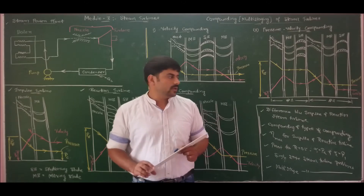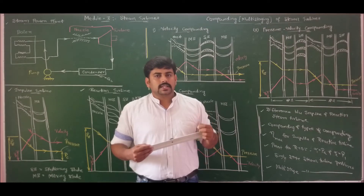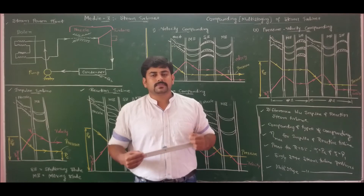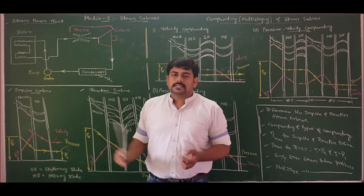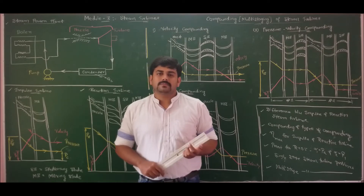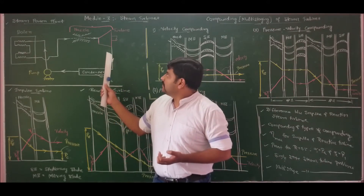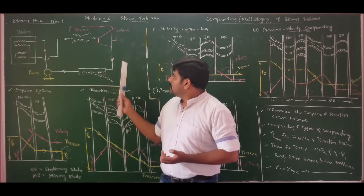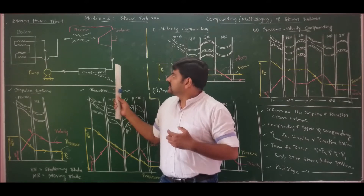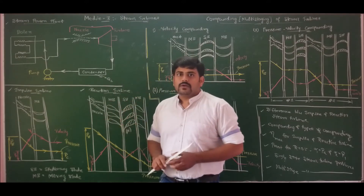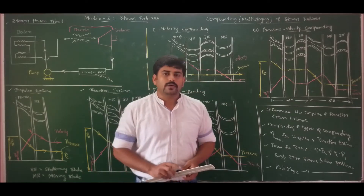For example, if steam enters with an absolute velocity of 1000 meters per second and the discharge velocity V2 is 500 meters per second, then 500 meters per second of kinetic energy is wasted. By adding another stage, that 500 m/s steam enters stage 2 and the discharge velocity might reduce to 200 m/s. Adding stage 3 further utilizes the remaining kinetic energy. So, to make utilization maximum, we should go for compounding or multi-staging.